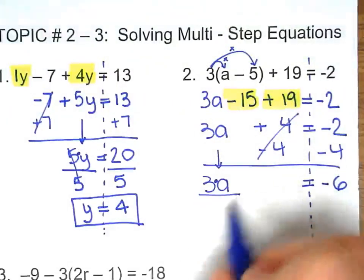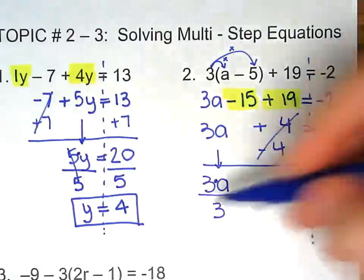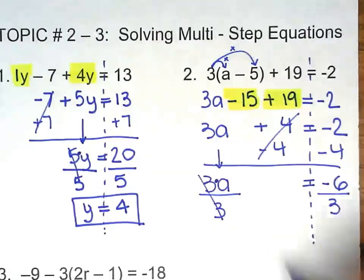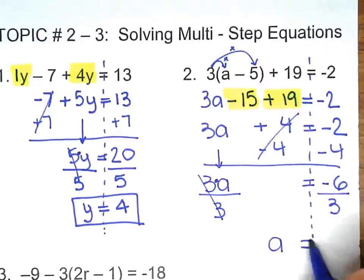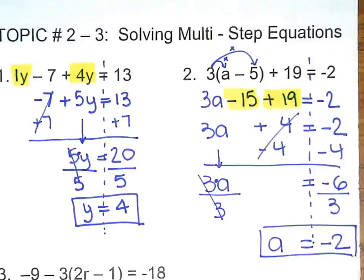Invisible multiplication right there. That means we have to divide both sides by 3. They go bye-bye. A is negative 2. Not bad. Number 3.